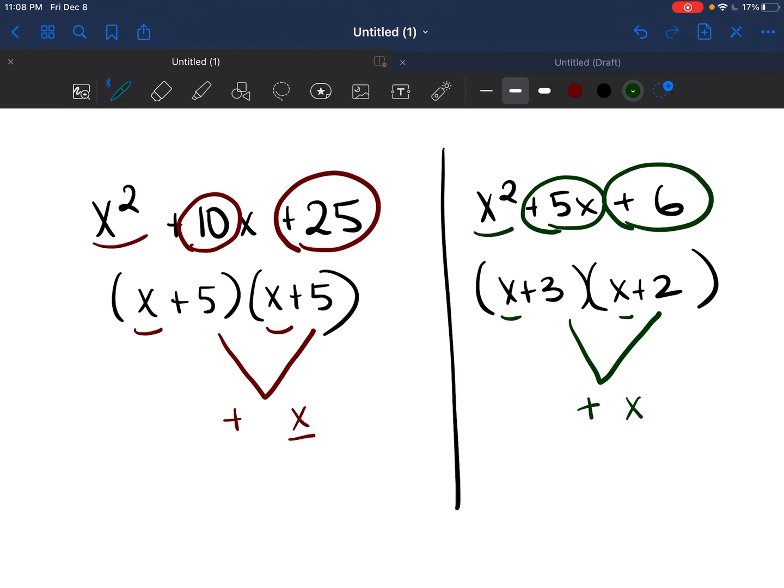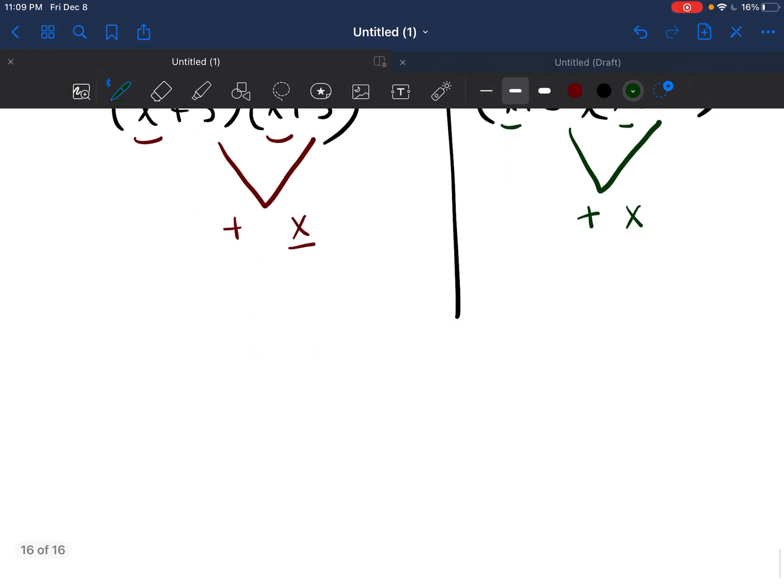Okay, so now we see how they're broken down when we have the answers. So let's see if we can now use that information and apply it to try to figure out what those numbers are if we're not given them or if we don't know what they are. So we're going to go ahead and factor this trinomial x squared plus 8x plus 12.